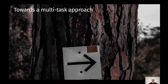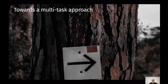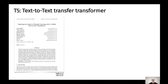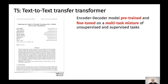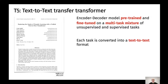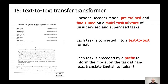However, it turns out that recently in literature, different multitask models have been proposed that can support a multitask setting. One of these is the T5, namely text-to-text transfer transformer. Presented by Raffel and colleagues from Google, the T5 model is an encoder-decoder model pre-trained and fine-tuned on a multitask mixture of unsupervised and supervised tasks, where each task is converted into a text-to-text format and each task is preceded by a prefix to inform the model on the task at hand.